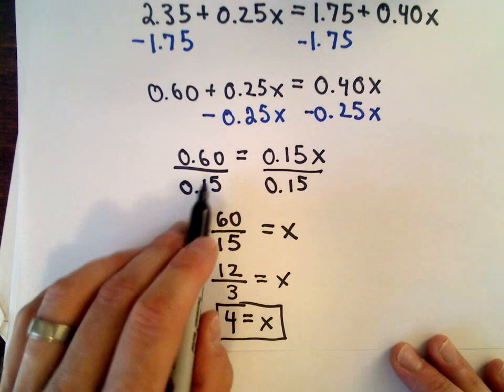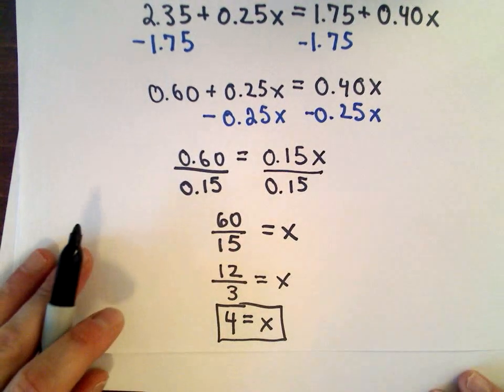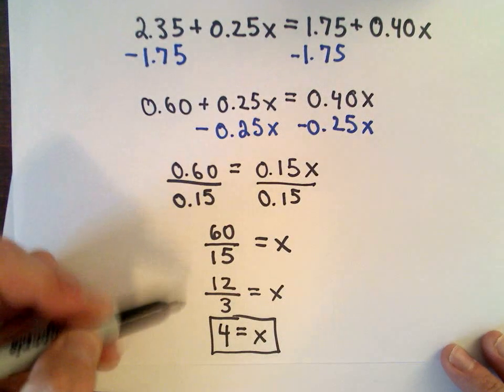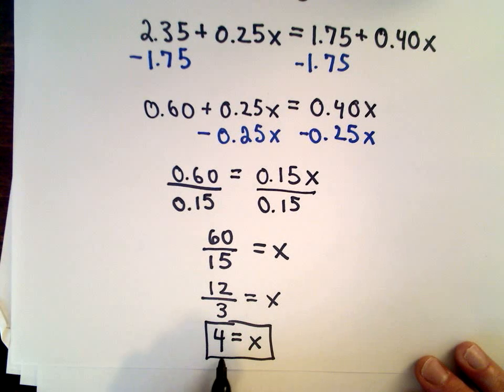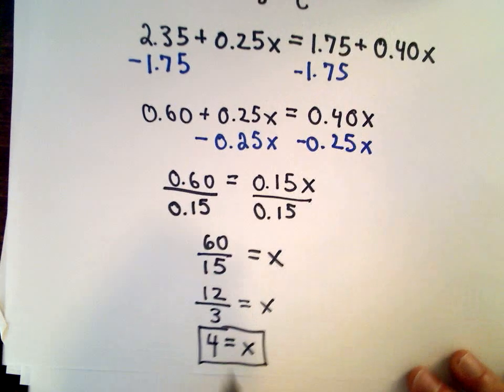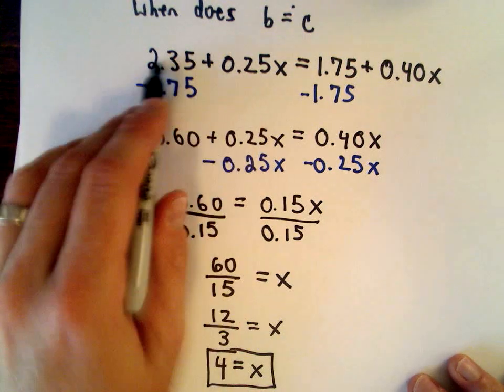Again, maybe you saw it immediately, x equals four. But again, just to refresh you on some decimals and on just reducing. Okay, so we know after four weeks the prices are equal. That's great. We still don't know the price. So again, we can use either of these two equations.